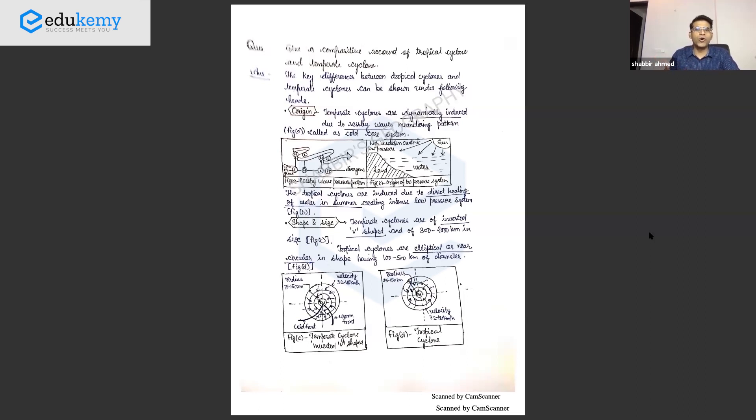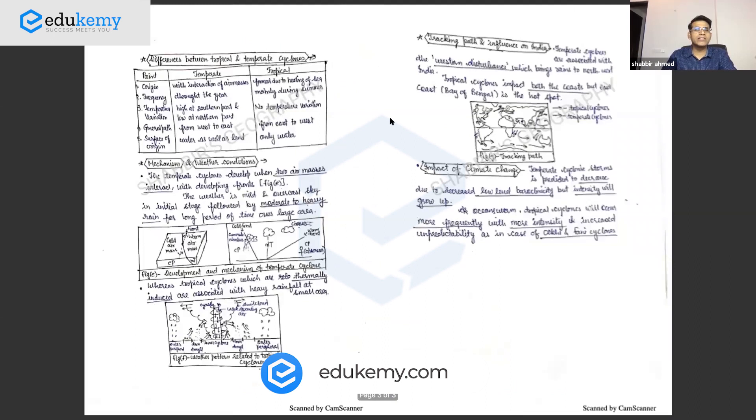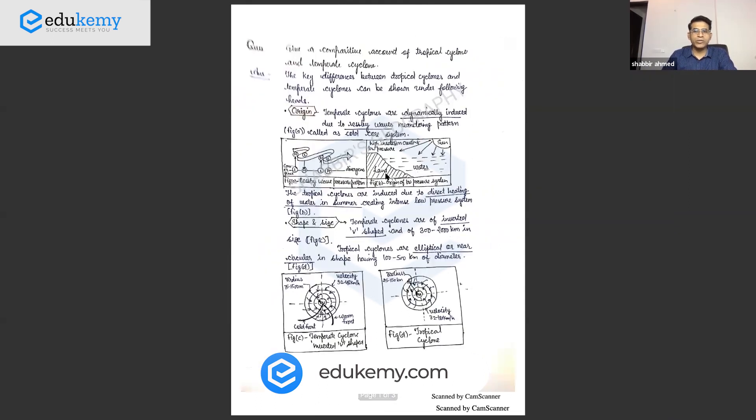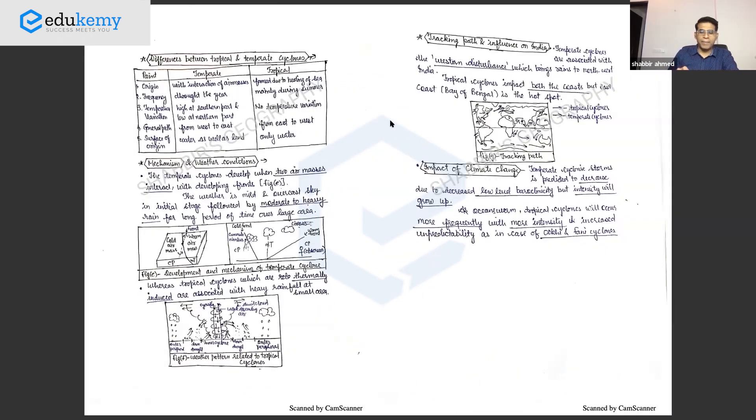Origin: temperate cyclones are dynamic, tropical cyclones because of latent heating. Include two diagrams here. Shape and size: temperate cyclones are elliptical, nearly circular, approximately 105 kilometer radius, whereas tropical cyclones - show this in terms of two diagrams for shape and size.